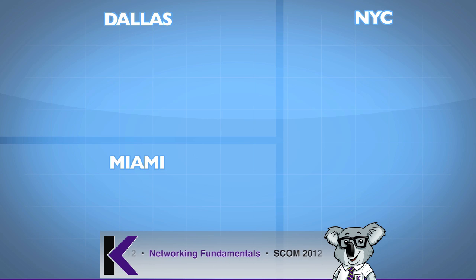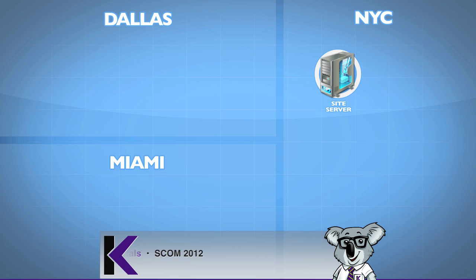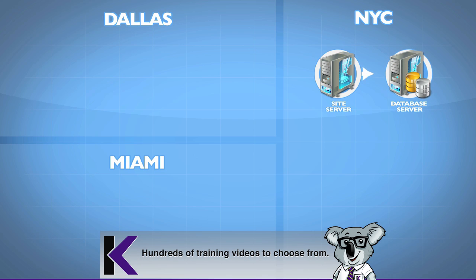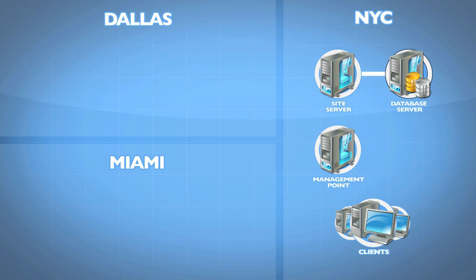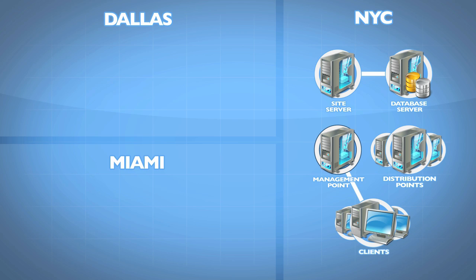Let's take a look at a scenario where we have our main office in New York. The main office has a site system for our primary site connected into a database. We have many different clients in that main office area with their management point and a series of distribution points that are local to them. Clients connect into their local management point, and when they need to retrieve heavy bandwidth downloads, they retrieve them from their local distribution points.